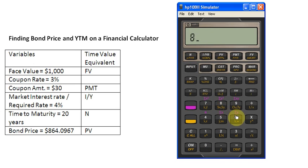And then $864.0967. And I must remember to store it as a negative number. So, I use this plus minus button here. I press this, make this number negative, and then store it into the present value button.